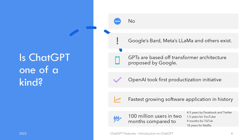It became the fastest-growing software application in history, with 100 million users in the first two months. Compare that with around four to five years for Facebook and Twitter, one and a half years for YouTube, nine months for TikTok, and 18 years for Netflix to reach the same milestone.